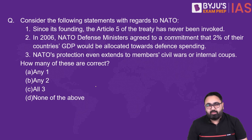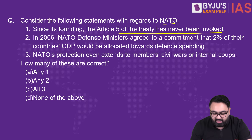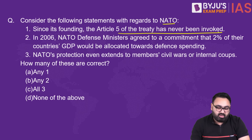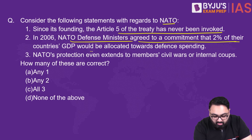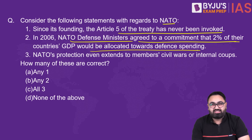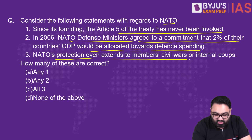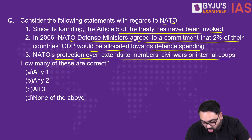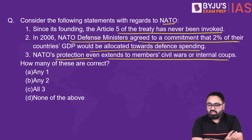Consider the following statements about NATO. One: since its founding, Article 5 of the treaty has never been invoked. Two: in 2006, NATO defense ministers agreed that 2% of their country's GDP would be allocated towards defense spending. Three: NATO's protection even extends to members' civil wars or internal coups. Read carefully, mark your answer, and take 15–30 seconds.